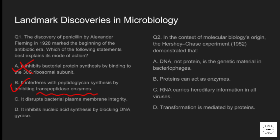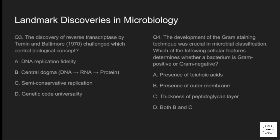Question two: in the context of molecular biology's origin, the Hershey-Chase experiment in 1952 demonstrated that — option A: DNA, not protein, is the genetic material in bacteriophages. Option B: proteins can act as enzymes. Option C: RNA carries hereditary information in all viruses. Option D: transformation is mediated by protein. The correct answer is option A. Hershey and Chase used radiolabeled phosphorus and sulfur, which proved that DNA enters the host cell during phage infection.